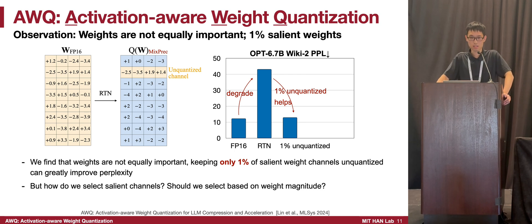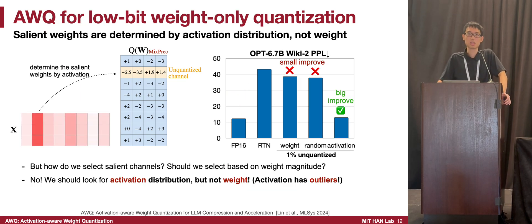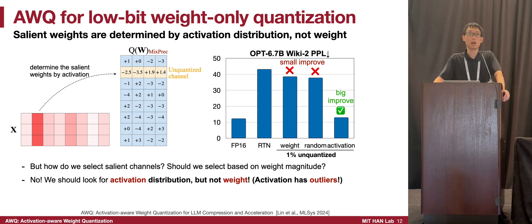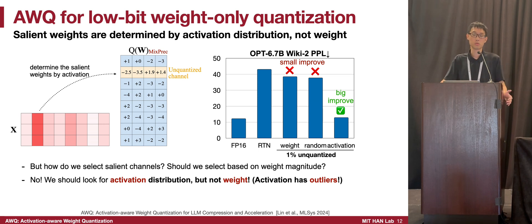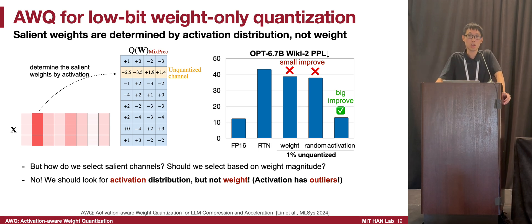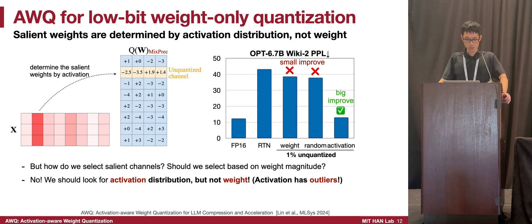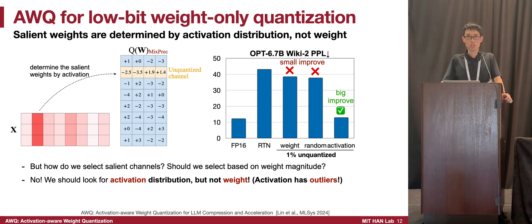A natural question is how to select these salient channels — based on weight magnitude, activation magnitude, or randomly? It turns out the selection has a very significant impact on accuracy. Surprisingly, contrary to conventional wisdom in the weight-pruning community, selecting salient channels based on weight magnitude shows no improvement over random selection. However, if we switch to activation-based selection — selecting channels with the largest activations — performance improves significantly. The key takeaway is that to identify important channels in large language models, we should look at the activation distribution instead of the weight distribution.